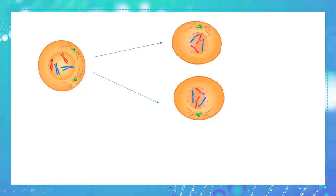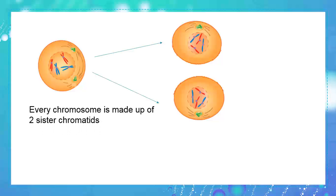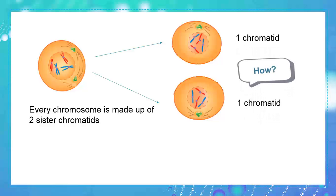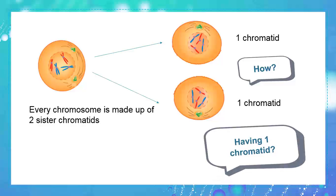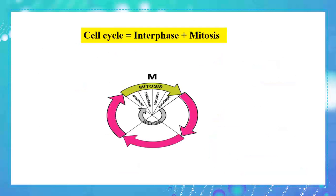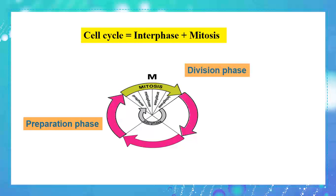However, there is one important thing to note: the mother cell contains four chromosomes where every chromosome is made up of two sister chromatids, while in the daughter cells, each chromosome is made up of only one chromatid. The solution to how this is possible lies in interphase, because the cell cycle is made up of interphase — the preparation phase — and mitosis — the division phase.